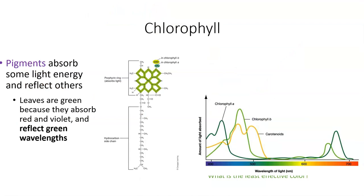A lot of pigments we see are that particular color because they absorb some light energy and reflect others. When we look at a leaf and see it's green, it's because it absorbed every other color except green. The green chlorophyll absorbed and cancelled out all other colors — the only color it did not cancel out was green, which is why we see it. So chlorophyll reflects the green wavelength while absorbing everything else.